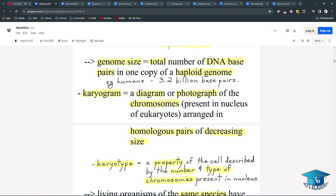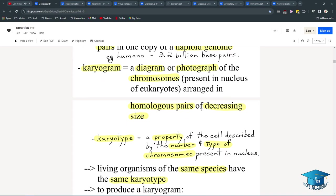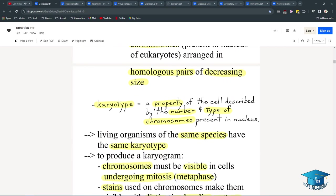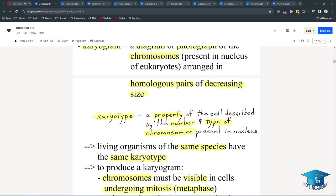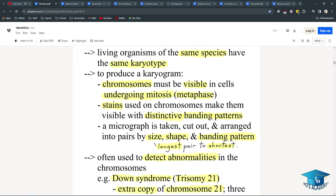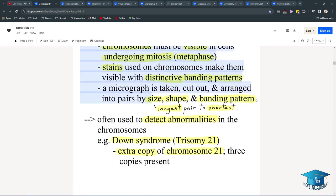A karyogram is a diagram or photograph of the chromosomes. And a karyogram is only taken during metaphase, where they're lined up in the middle and easy to see. And they're arranged in homologous pairs of decreasing size. And this is how you can tell whether someone has a certain trait. A karyotype is a property of the cell described by the number and type of chromosomes present. So the karyogram would inform me about the karyotype. Because this is the photo, like a gram, and the karyotype is what we have. To produce, the chromosomes must be visible in cells undergoing mitosis. So yeah, metaphase, I was right. And stains, such as dye, are used to show the distinctive banding patterns that aren't actually that distinctive because they're really hard to see during that lab we did. And a micrograph is taken, cut out, and arranged into pairs by size, shape, and banding pattern. This is a valid job.